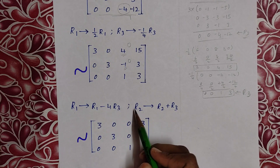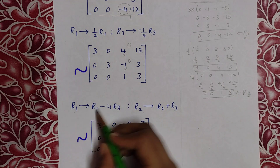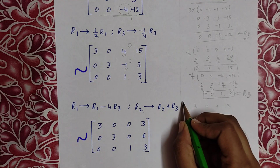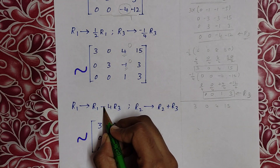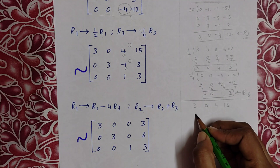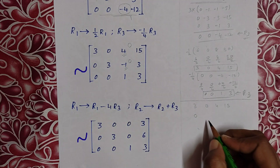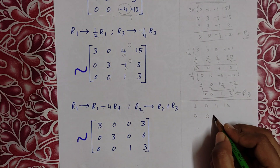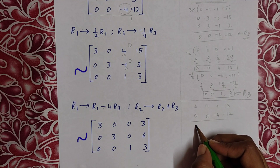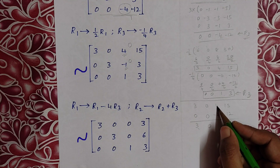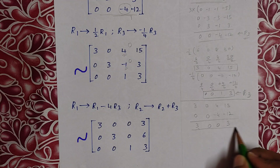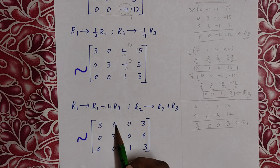R1 tends to (1/2)R1: (1/2) into [6, 0, 8 | 30] gives [3, 0, 4 | 15]. R3 tends to (-1/4)R3: (-1/4) into [0, 0, -4 | -12] gives [0, 0, 1 | 3]. This is the new R3. To make the 4 in R1 and -1 in R2 equal to zero, we perform R1 and R2 operations.